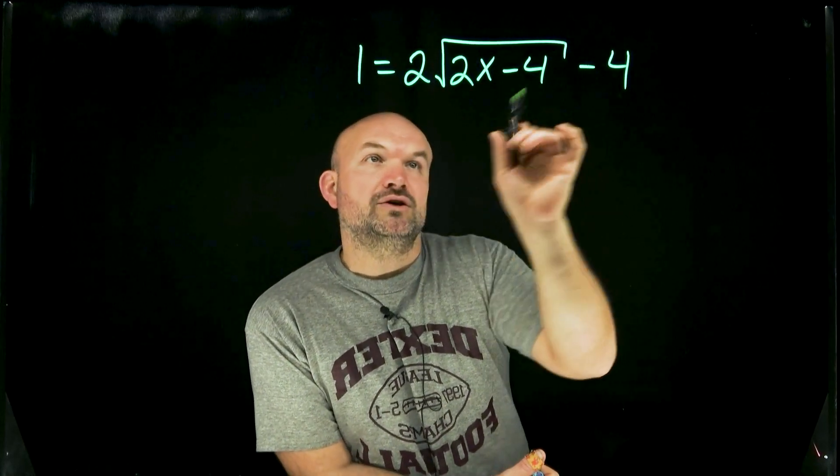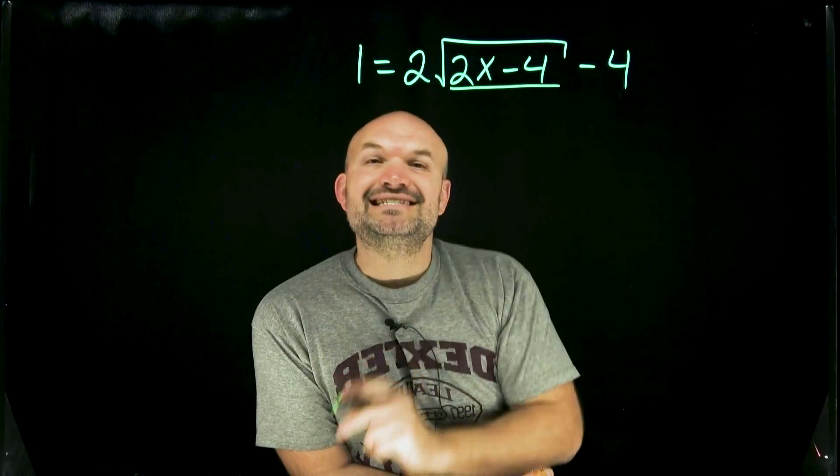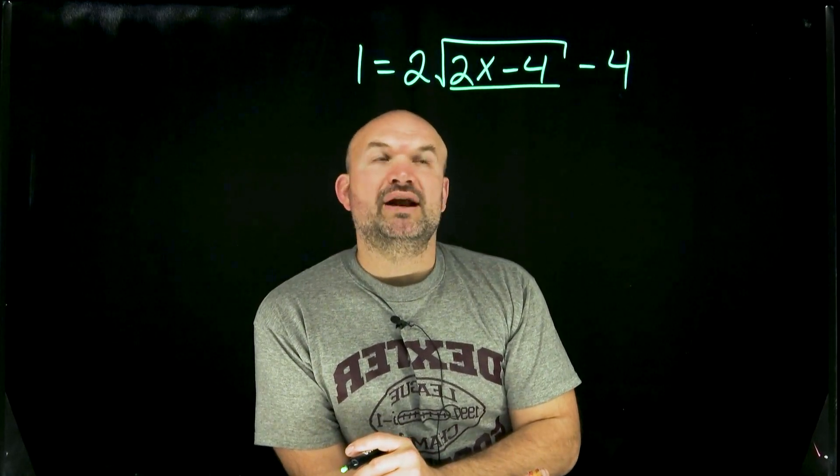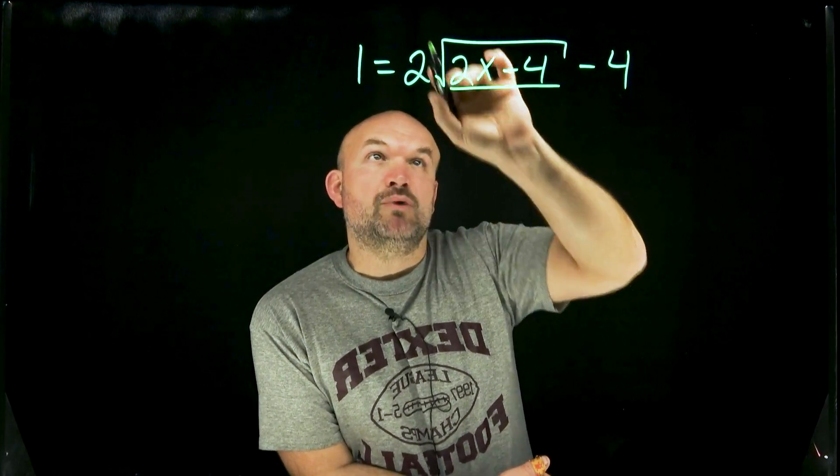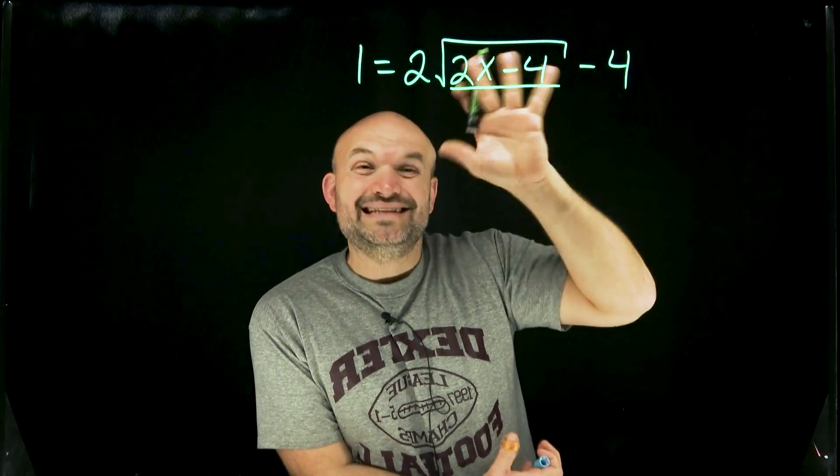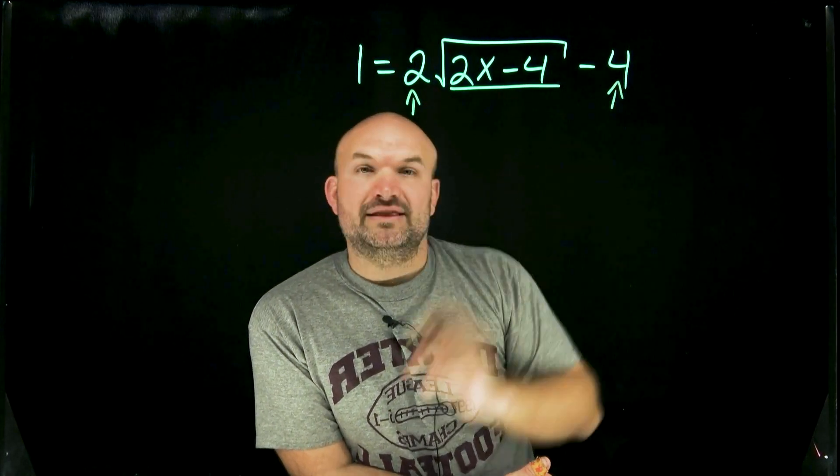For the square root or a radical, anything that's under that radical is going to be what we call inside of our function. So what we're going to want to do, focus on first, is to isolate that function. The square root function is going to be our function. We need to isolate it. So what that means is we need to undo the 2 and the 4.